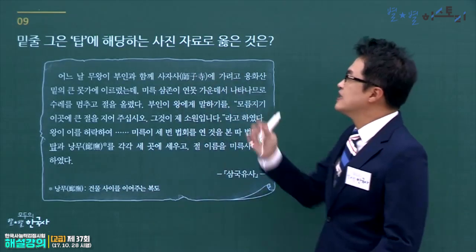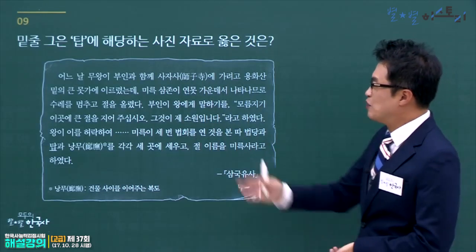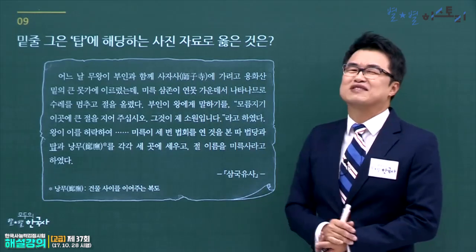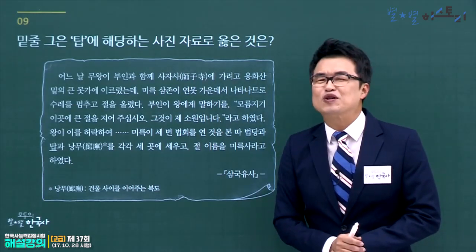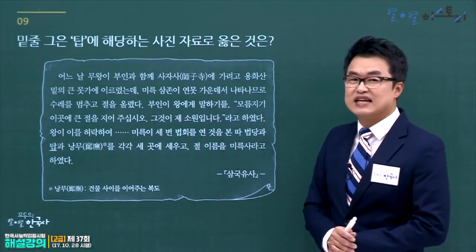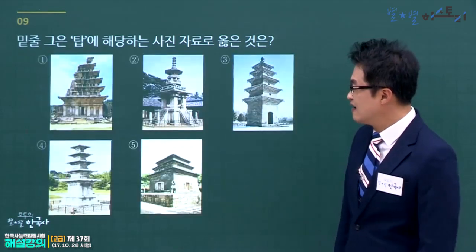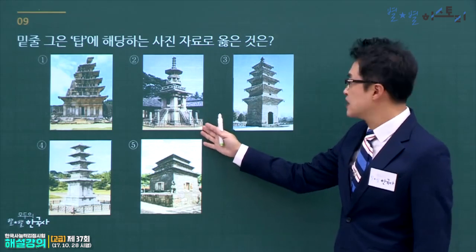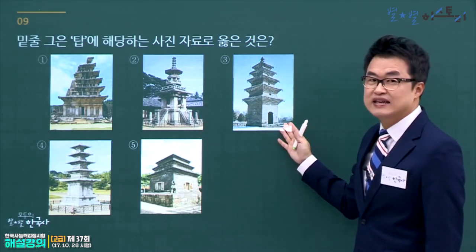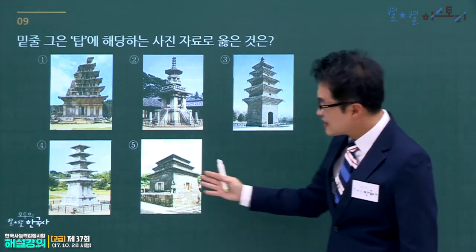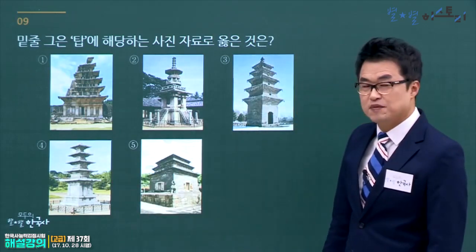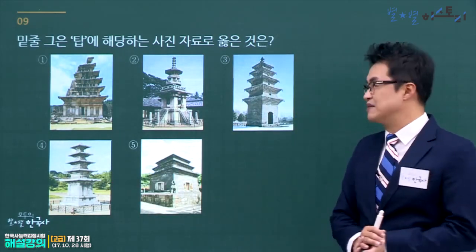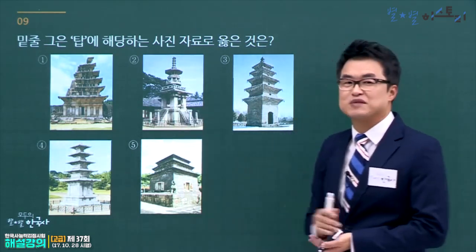백제 무왕이 부인과 함께 미륵사를 세운 곳은 익산 미륵사지 석탑입니다. 서동과 선화공주 이야기와 연결됩니다. 2번은 불국사 다보탑, 3번은 발해 영광탑, 4번은 백제 정림사지 5층 석탑 또는 신라 분황사 모전석탑입니다. 정답은 1번, 익산 미륵사지 석탑입니다.